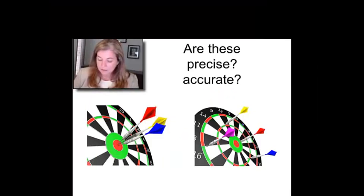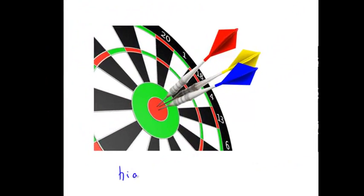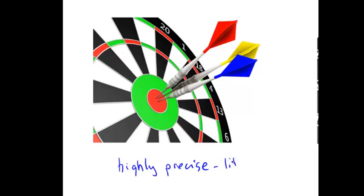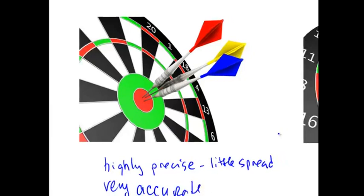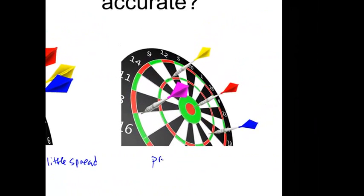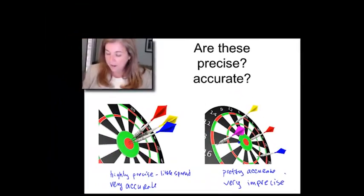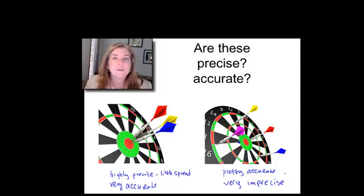In these examples, you can see here, this is highly precise because there's little spread in the measurement, and it's very accurate because it actually hit the center. Over here on the right, I might argue that it's pretty accurate because if you averaged all those numbers, you'd probably end up with the bullseye somewhere about here, which is not that far off, but it's very imprecise. So be clear that you can have accuracy without precision and you can have precision without accuracy. The two are not necessarily caused by the same factors.